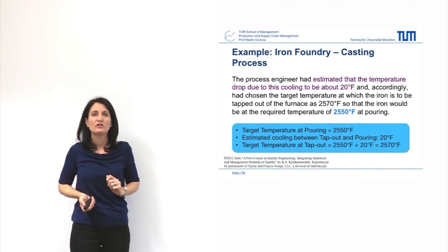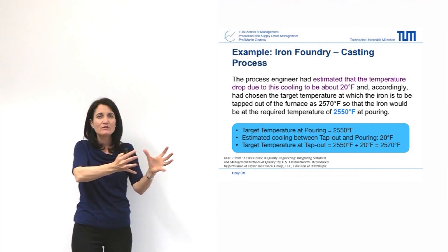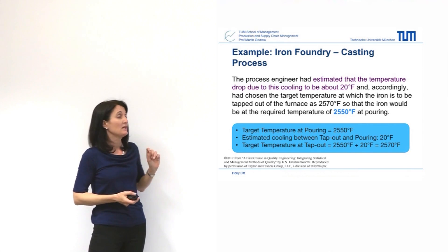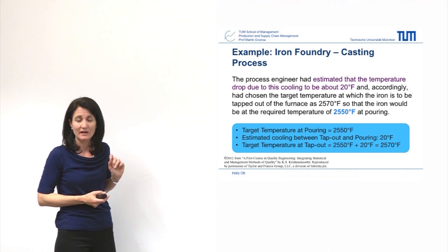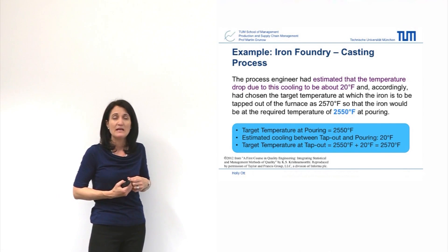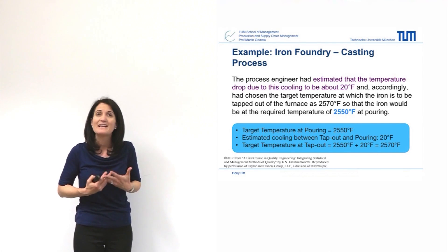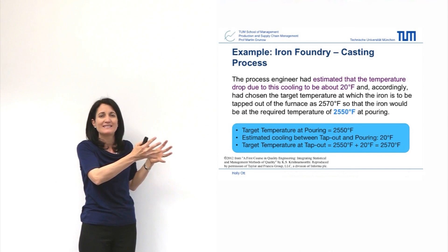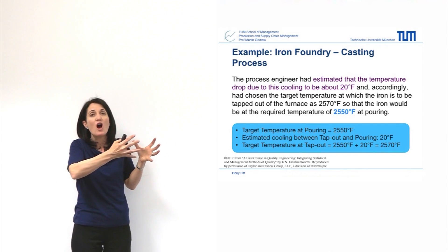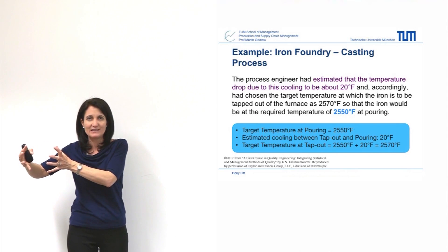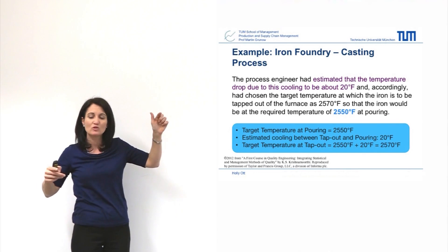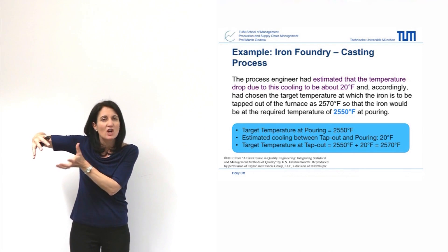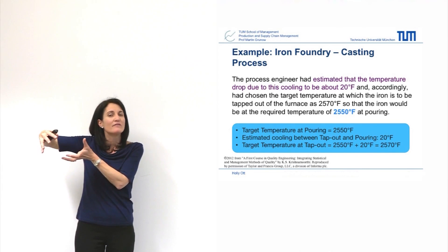You have molten iron from a furnace traveling through the factory about 150 yards, then poured into the castings. You have a few parameters to get from the people in the factory. The process engineer has estimated that the temperature from the tapping out — when the molten iron is taken from the hot furnace — drops about 20 degrees Fahrenheit. When it is finally poured, it is 20 degrees Fahrenheit cooler. The target temperature for this pouring is 2,550 degrees Fahrenheit.